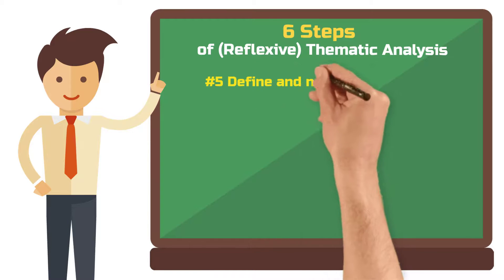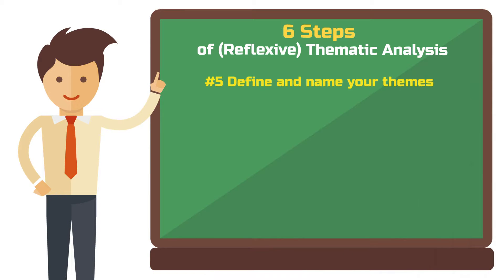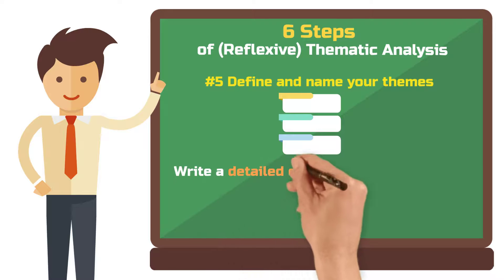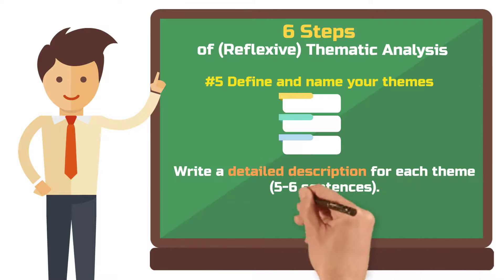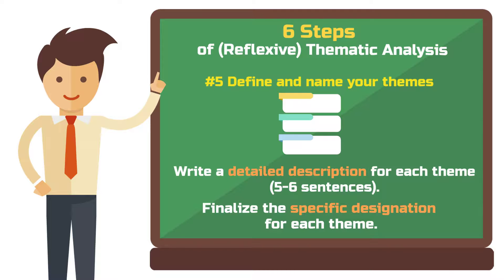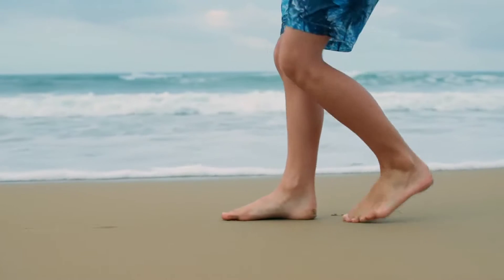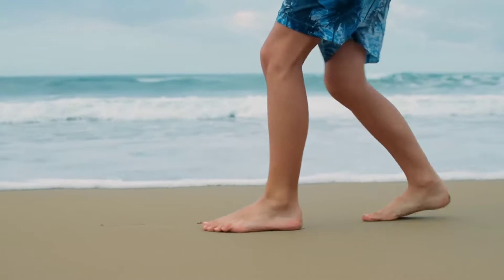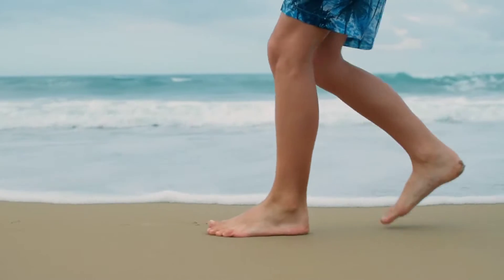Step 5: Define and name your themes. Now write a detailed description for each theme, comprising 5–6 sentences. Also finalize the specific designation for each theme. If you encounter issues while describing or naming, it typically indicates that the theme isn't distinct enough yet. In such cases, revert a step or two and reconsider.